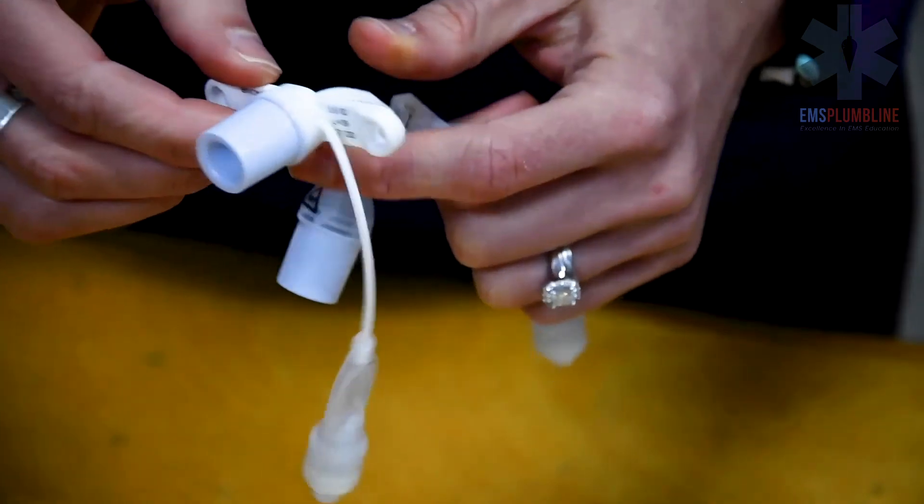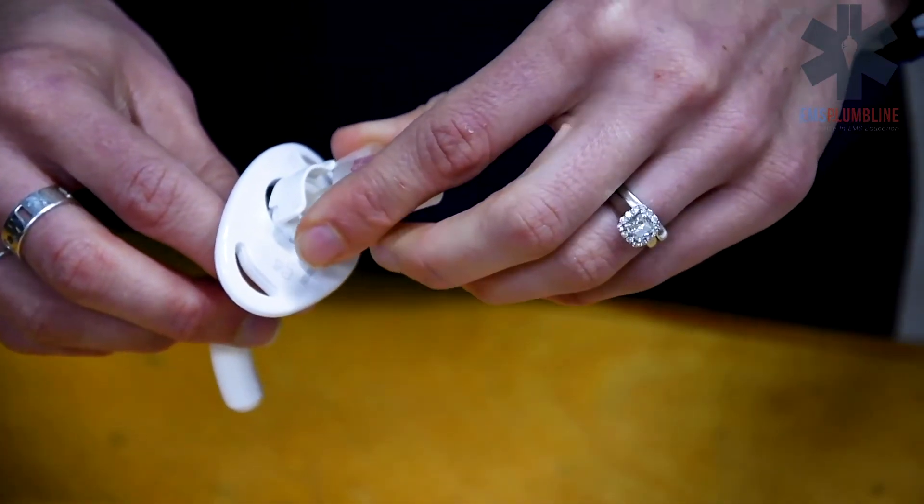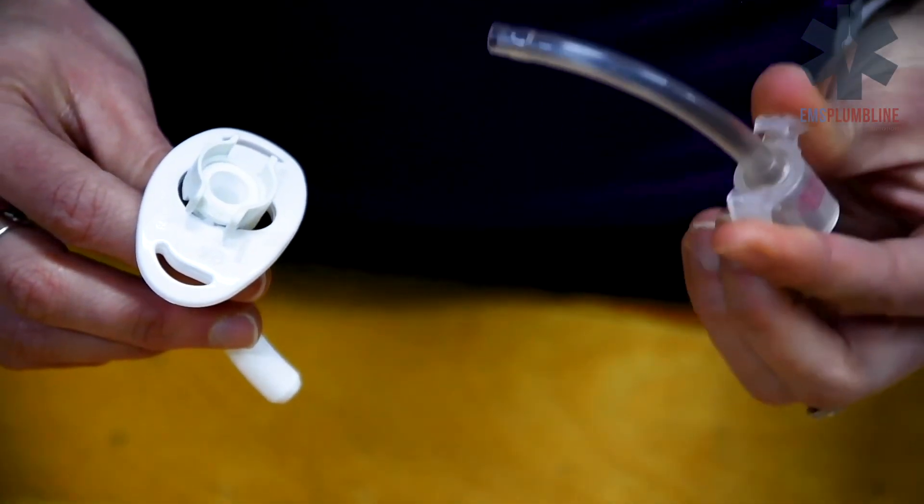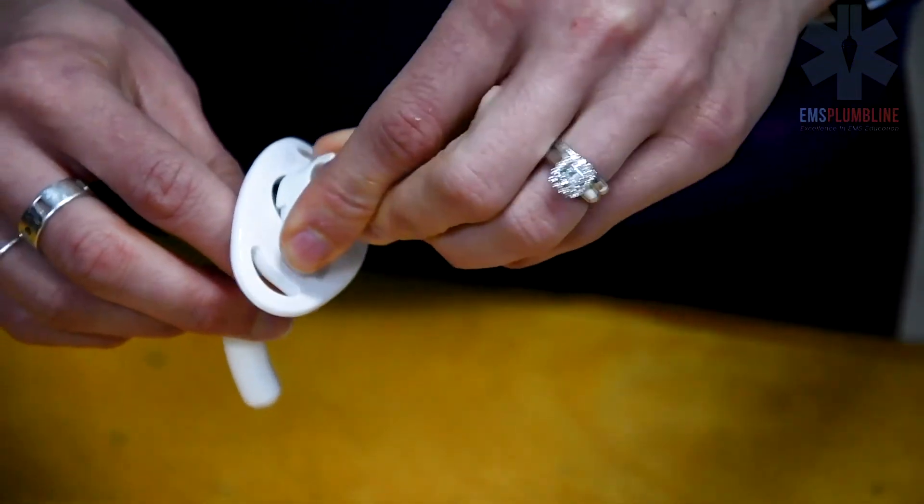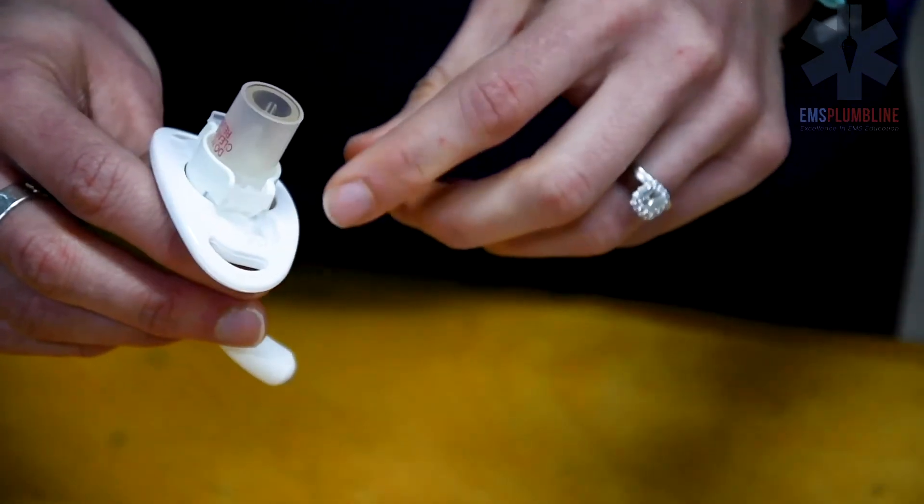An adult tracheostomy tube is larger, not only with the inner diameter, but also the length. Adult tubes can fit an inner cannula, which is changed daily.